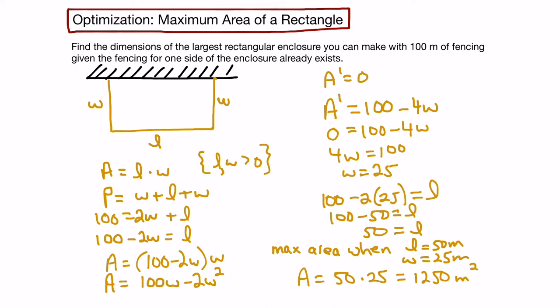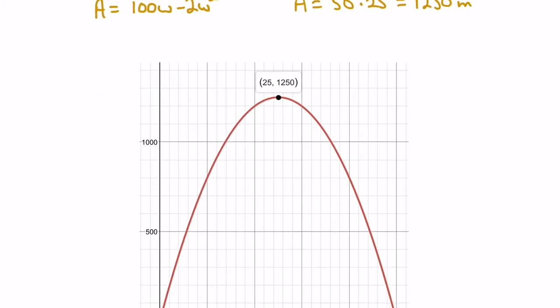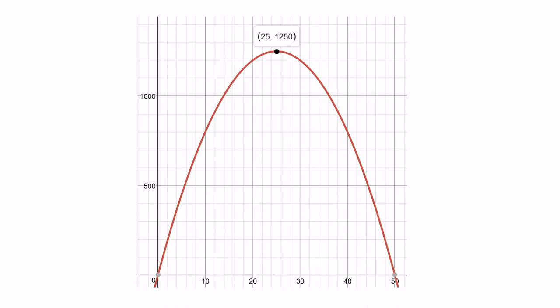Now let's confirm that it is indeed a maximum. I'm going to show a plot of our function. This is our area equals 100w minus 2w squared function. Our vertical axis is area and our horizontal axis is the width. Our critical point exists right here where the slope of the tangent line is 0. If we extrapolate that down, we can see that its width is 25.